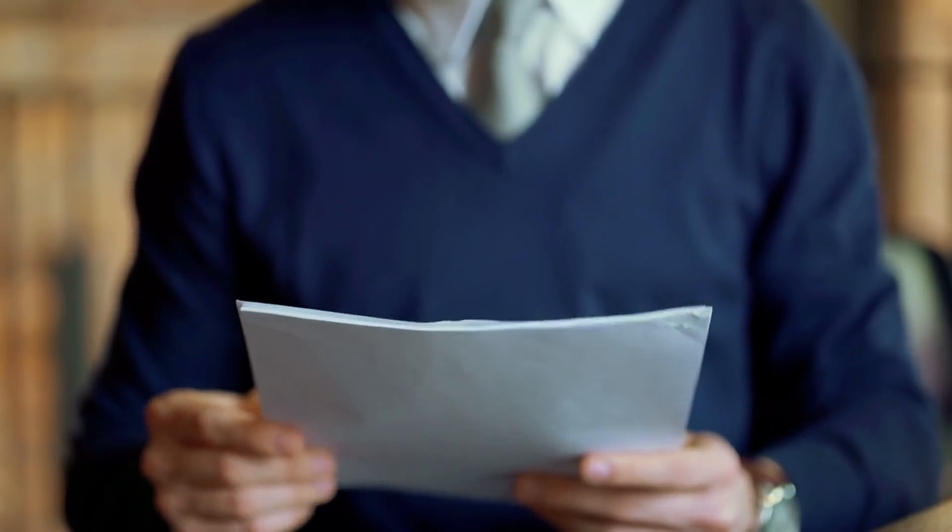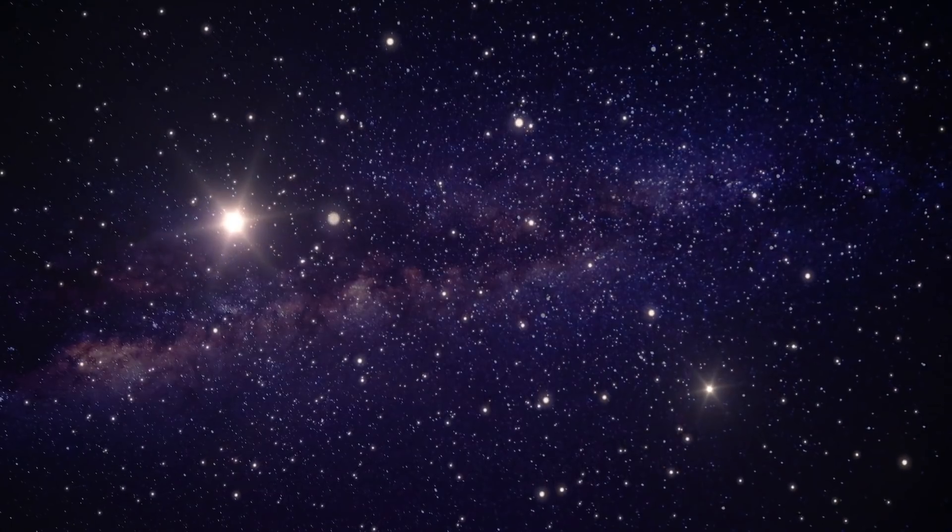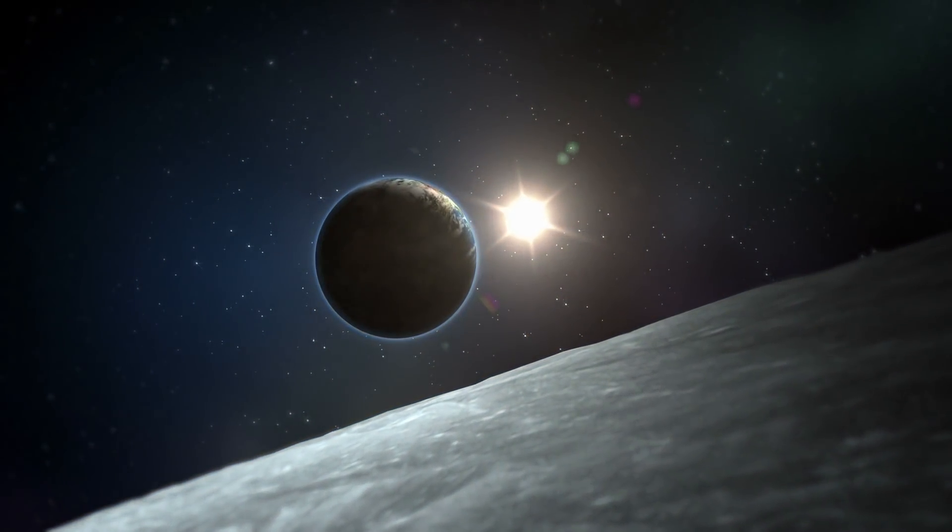In a new paper, researchers turned this formula on its head and asked which nearby stars are properly aligned for their inhabitants to see Earth's transit in front of the Sun. Would any life forms in those star systems be able to detect signs of us, the living creatures on Earth's surface?